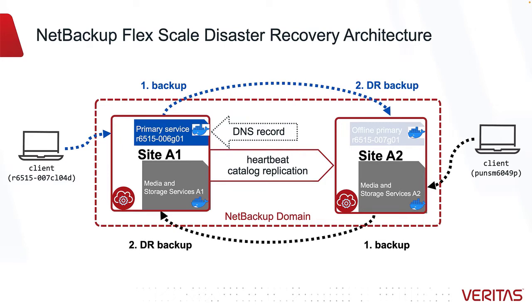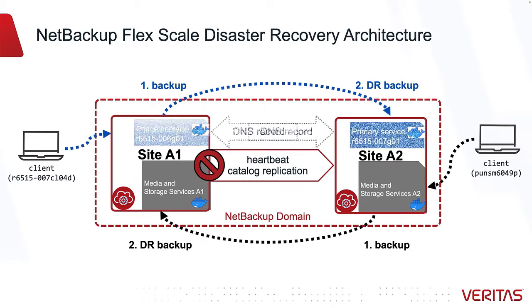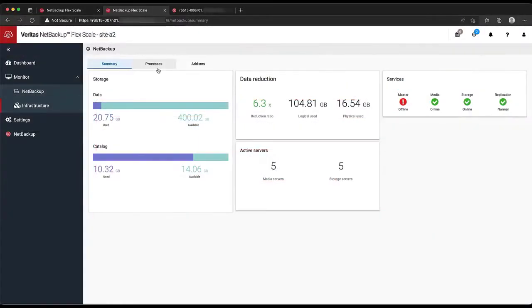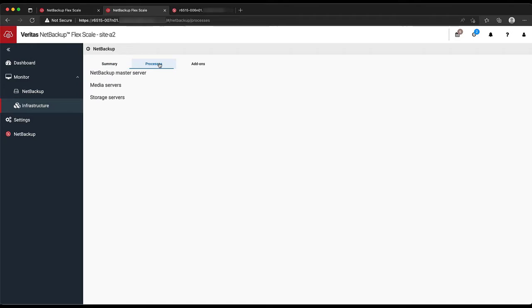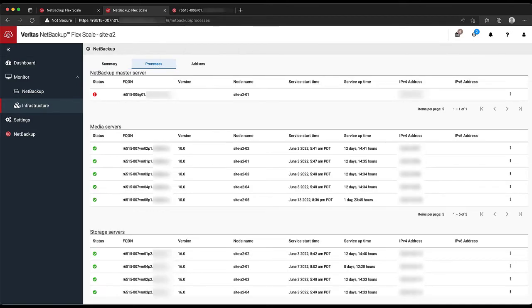In a moment, when we simulate a total outage at site A1, I'll show how easy it is to get up and running after the disaster recovery procedure. First, let's head to the Infrastructure User Interface for site A2 to make sure that our disaster recovery relationship with the other site is healthy.